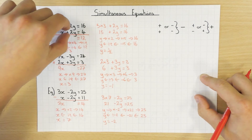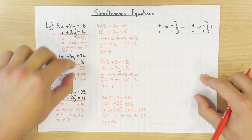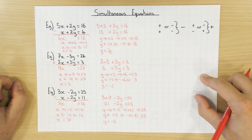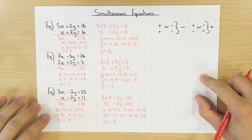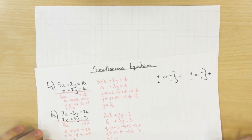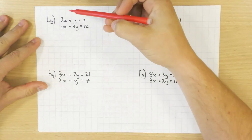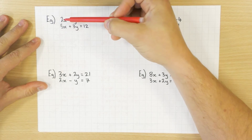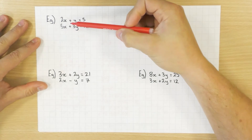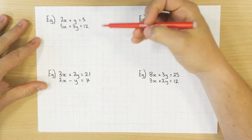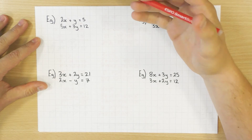Those were nice examples where the y coefficients were already the same — 2y and 2y, 3y and 3y. But it gets trickier. Flipping to the next page, I've got 2x and 5x, and y and 3y. Nothing is the same, so adding or subtracting these equations won't eliminate anything — you're stuck. However, we can get over this relatively easily.